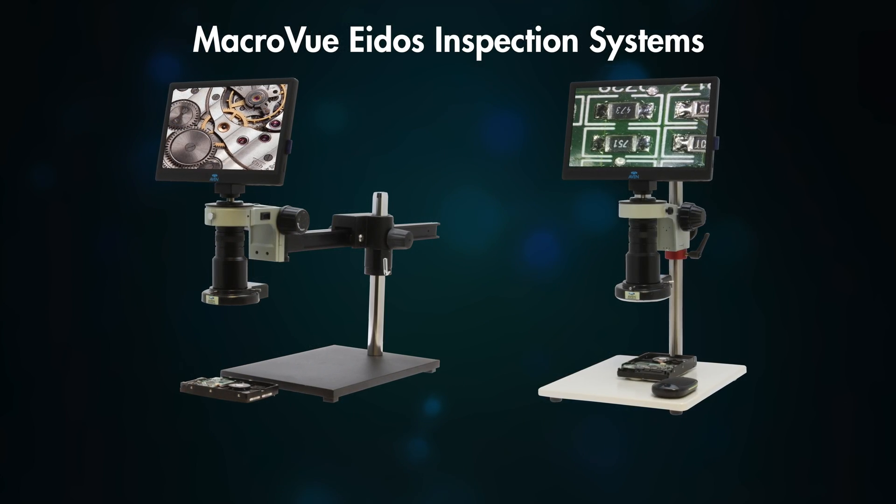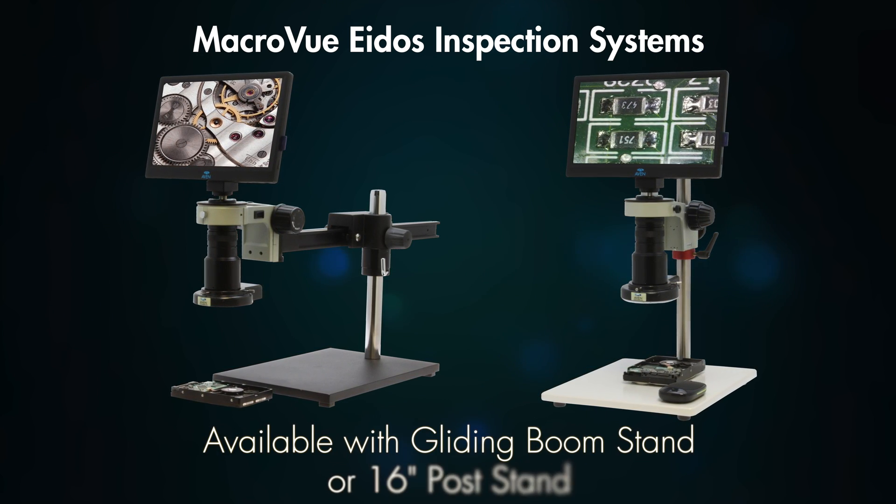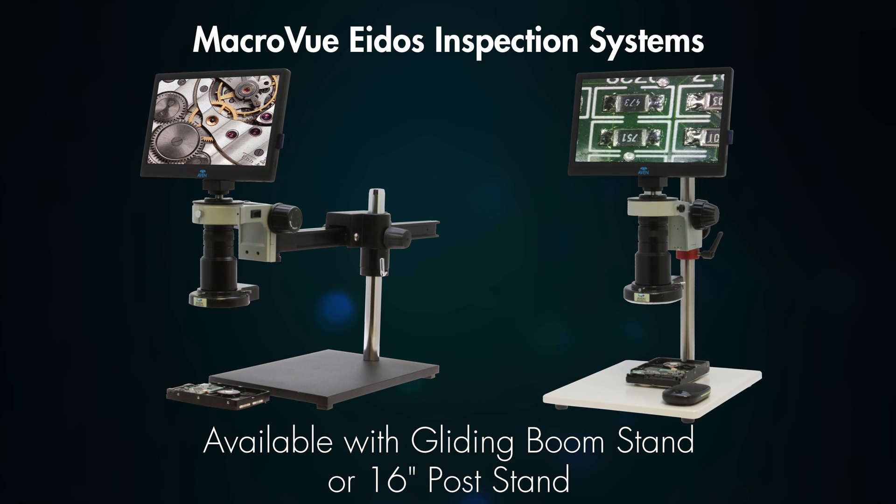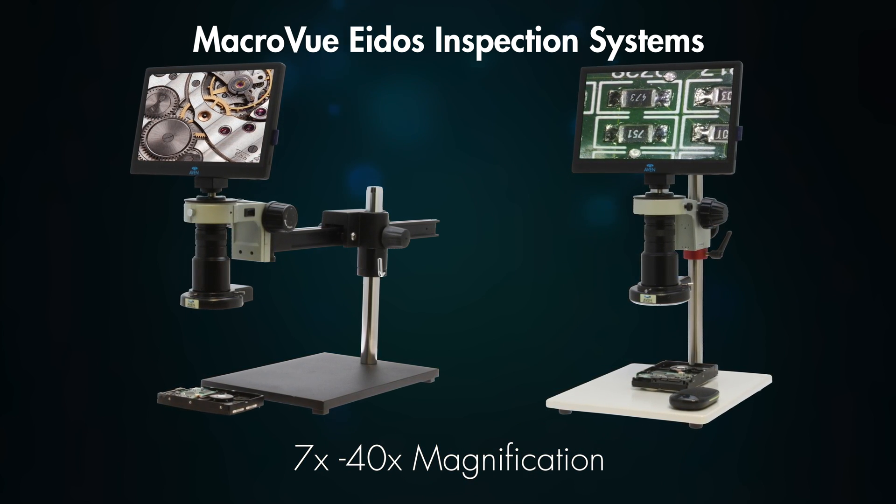The Eidos is also featured in new macro view video inspection systems available with a gliding boom stand or a 16-inch post stand and offers a magnification range of 7x to 40x at a 6-inch working distance.